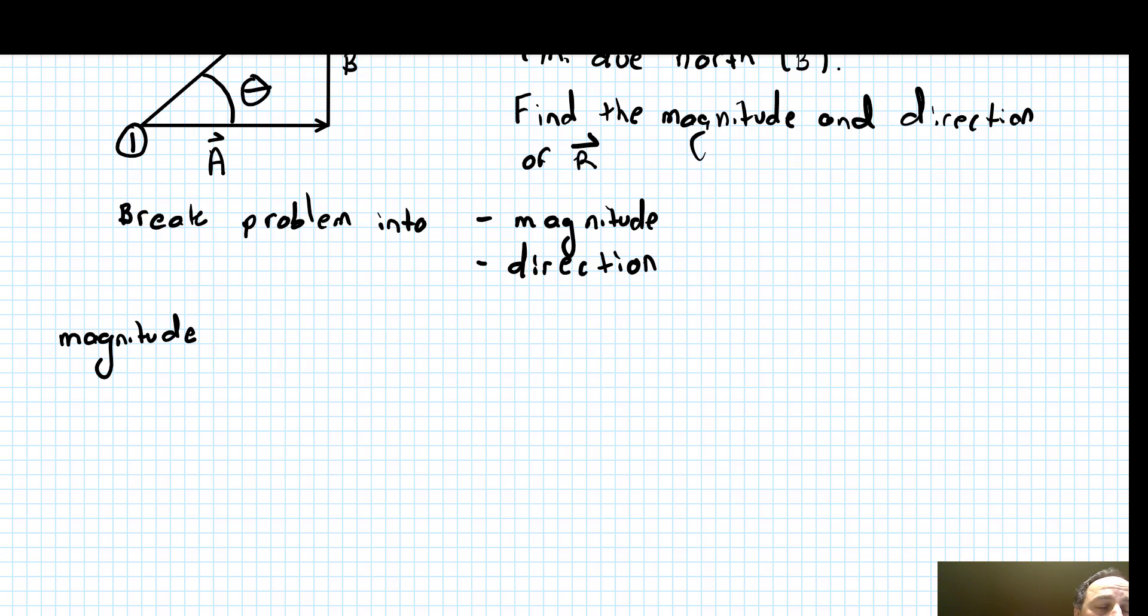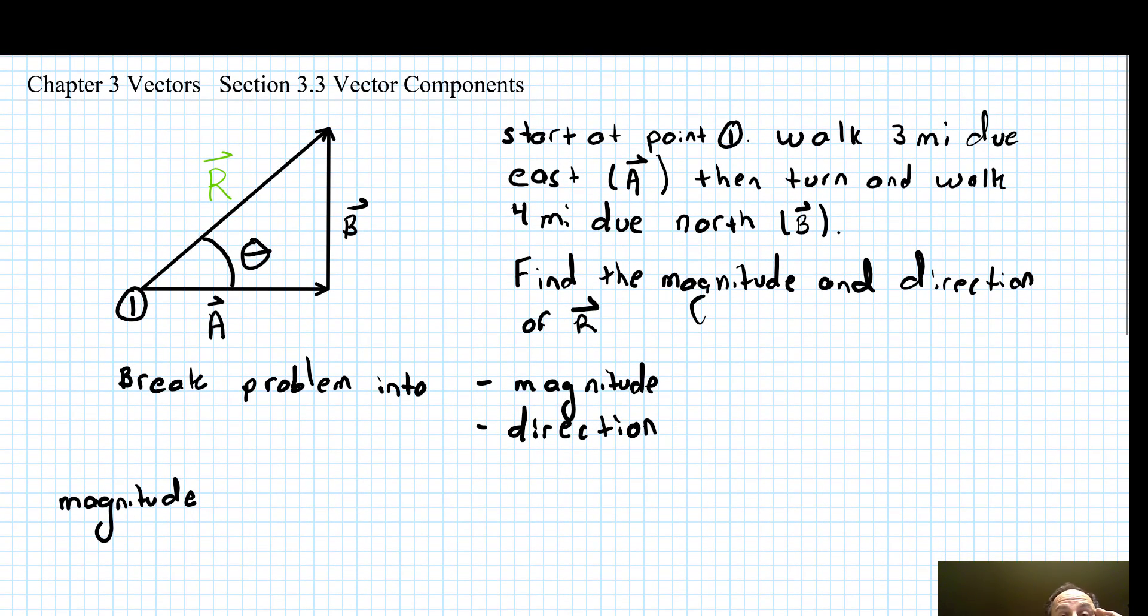First, magnitude. We're told we go from east to north, so we know this is a right angle. That means we can use the Pythagorean theorem. r is the square root of the magnitude of a squared plus the magnitude of b squared. So square root of 3 squared plus 4 squared, and r comes out to 5 miles.